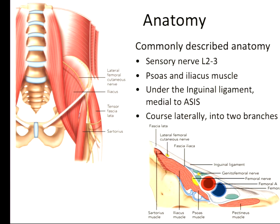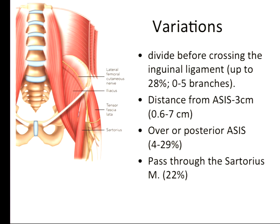Looking at the cross-section at the inguinal ligament level, the nerve can be over the sartorius muscle or superficial to the iliacus muscle, usually between the two fasciae. However, there is a lot of variation. Looking at the literature over the last 15 years, there are probably 12 articles published on different variations. To summarize: at the inguinal ligament level, while we usually think it's one nerve, it can be divided into up to five branches in up to 28% of cases.